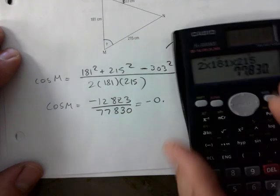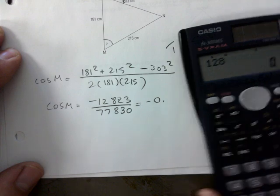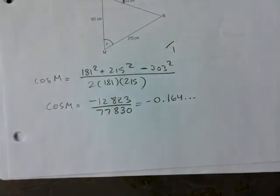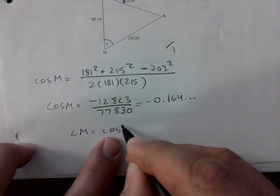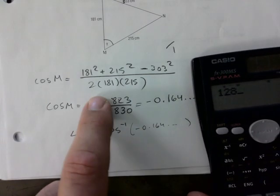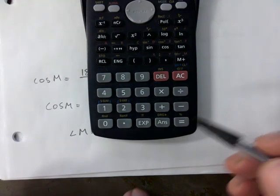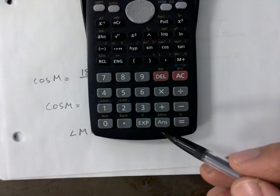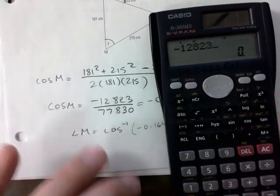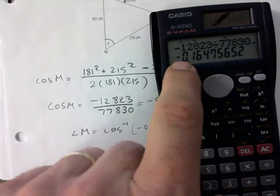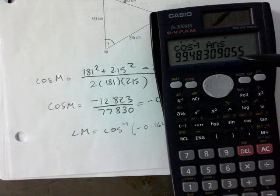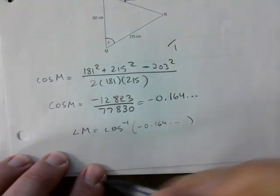Then I'm going to clean this up a bit, and you're going to get a negative, right? Like if you did this right, that's why I made you change that number. So you get negative 12,823 for the top, 2 times 181 times 215, you get 77,830 for the bottom part. And yes, that gives you a negative, right? If you divide these, you get negative zero point 16 something, 16.4 something. You're telling me I'm using all the decimals, then the last step would be cosine inverse.